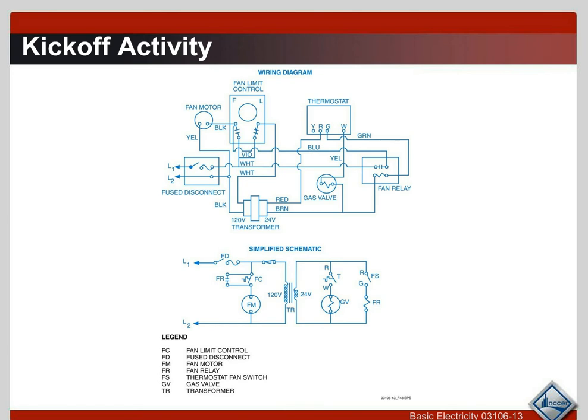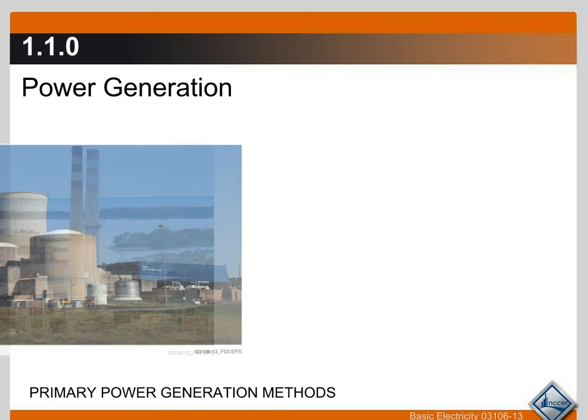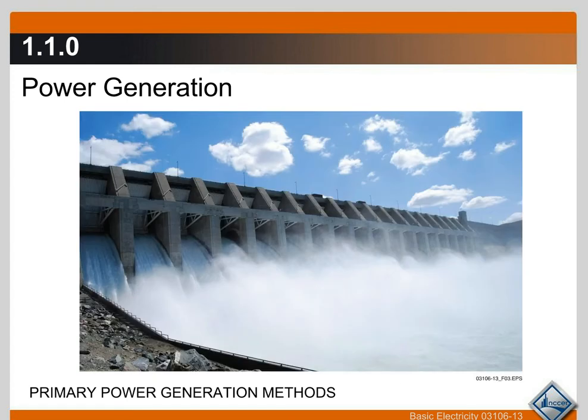Before we do that, we need to step back and start at the beginning, and that is with power generation. We get most of our power from coal generated plants, nuclear plants, and turbine dams. There's also wind generation coming up and solar, but these are our primary power generators in the United States at this time.